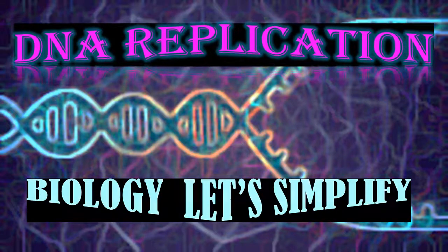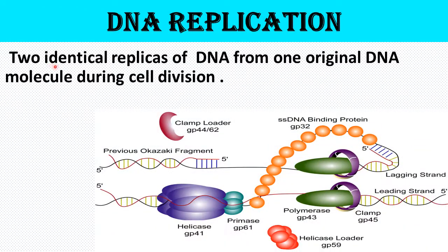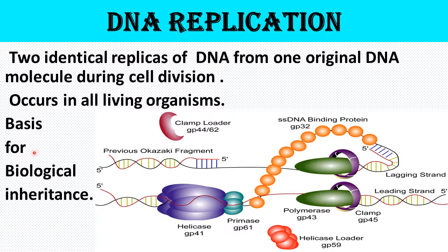Welcome back. In this set of video lectures I'll be talking about the DNA replication process in prokaryotes and eukaryotes. DNA replication is the biological process of producing two identical replicas — that is, copies — of DNA from one original DNA molecule during cell division. It occurs in all living organisms and it's the basis for biological inheritance.